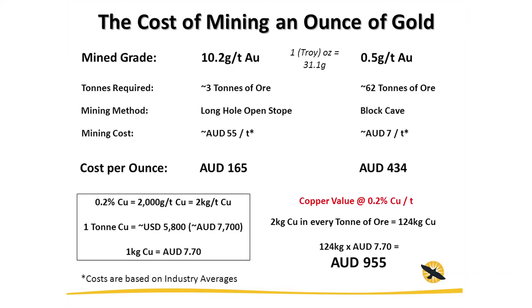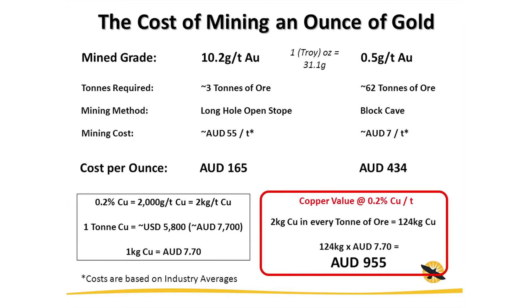Every tonne of ore in Cadia contains 0.2% copper — that's 2,000 grams, or 2 kilos. At current prices, the Australian dollar price per tonne of copper is about $7,700, so roughly $7.70 per kilo. We've got two kilos in every tonne of ore at Cadia, so that's 124 kilos of copper over our 62 tonnes. Times that by $7.70 and that's an extra $955 — which has more than paid for just getting the gold out and then some.